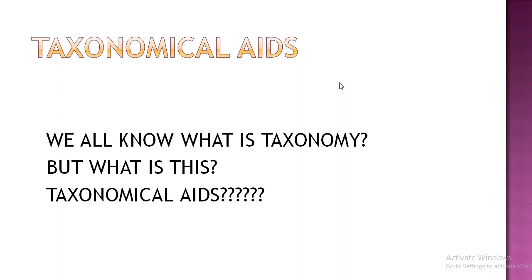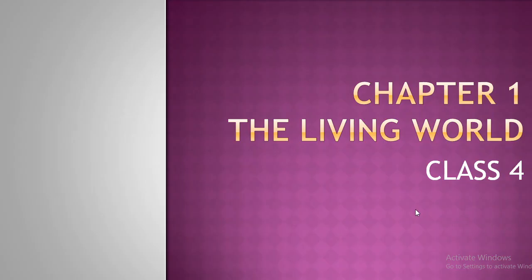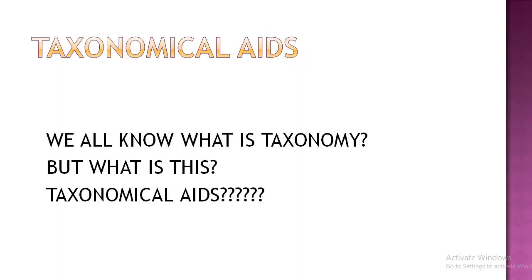Today we are going to look at taxonomical aids. What is taxonomy? Taxonomy is classification based on characteristics. For example, we use characteristics like the fastest running animal - we compare cheetah, jaguar, and humans and conduct a category.